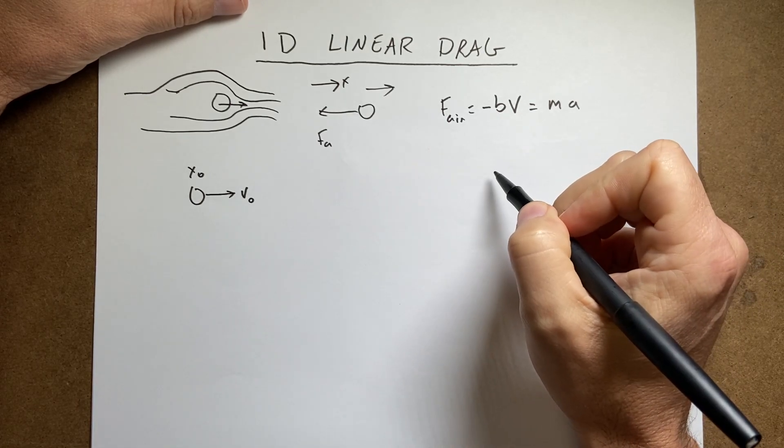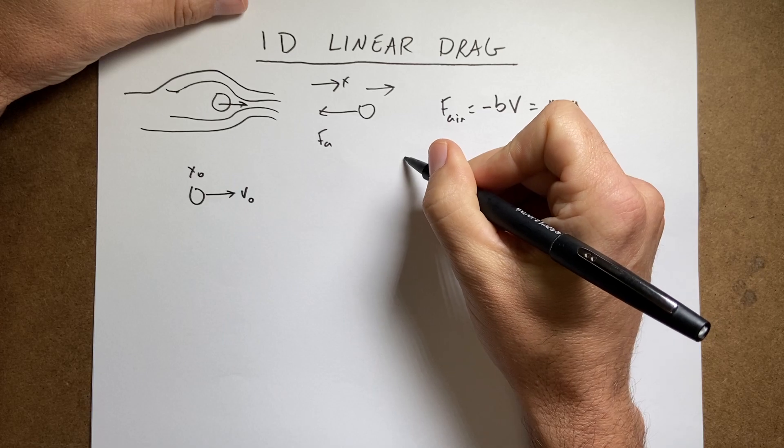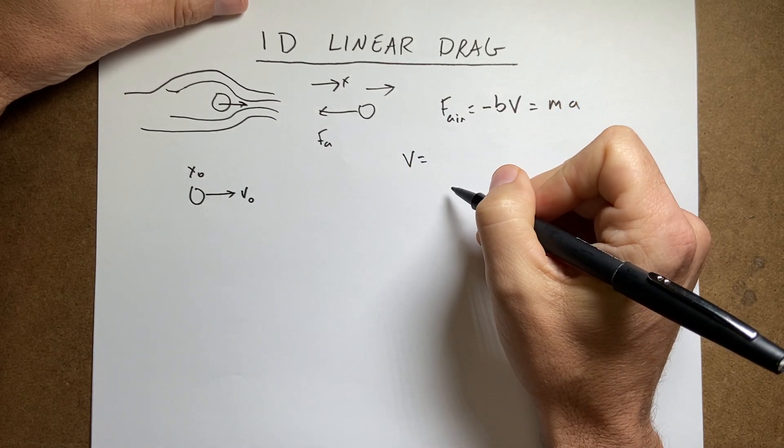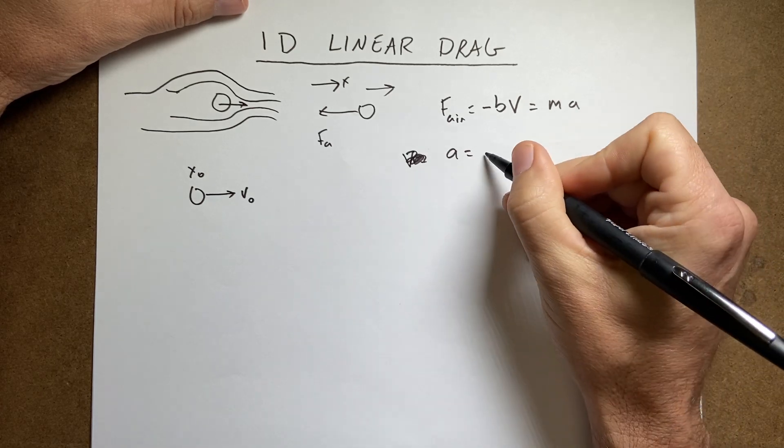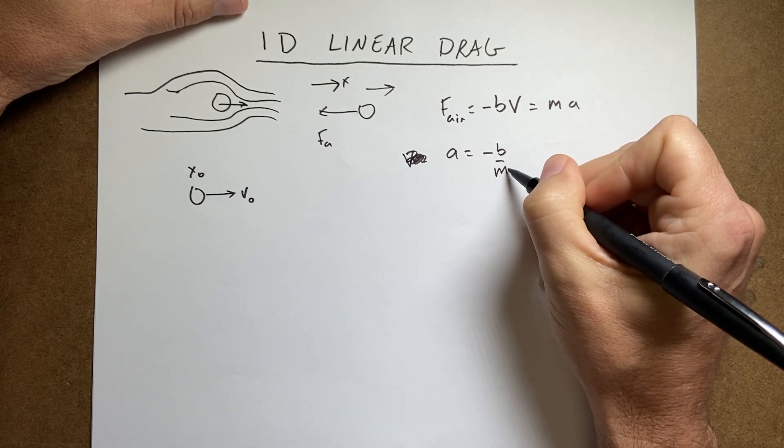So I have that. Let's solve for A. A equals negative B over M V.